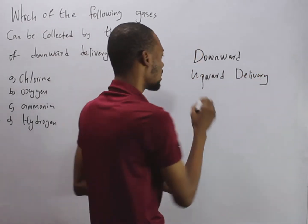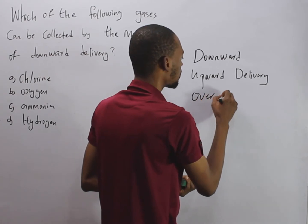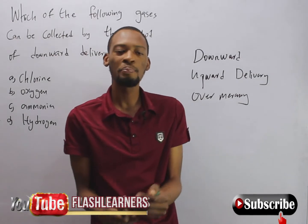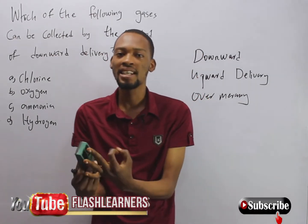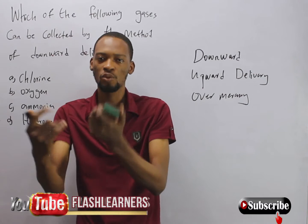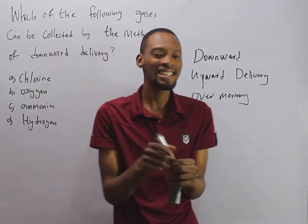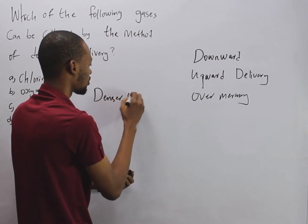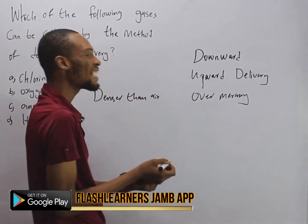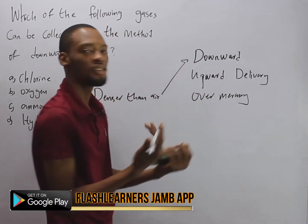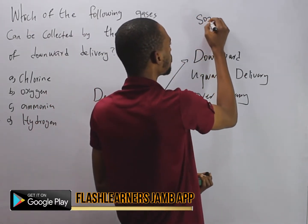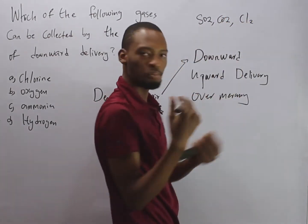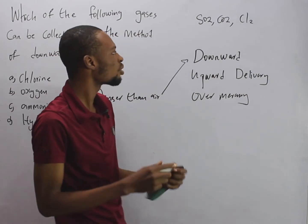We can also collect gases over water and over mercury. The method of collection of a gas depends on its density or weight and its solubility in water. If a gas is denser than air, it is collected by downward delivery. Examples are SO2, CO2, and chlorine.